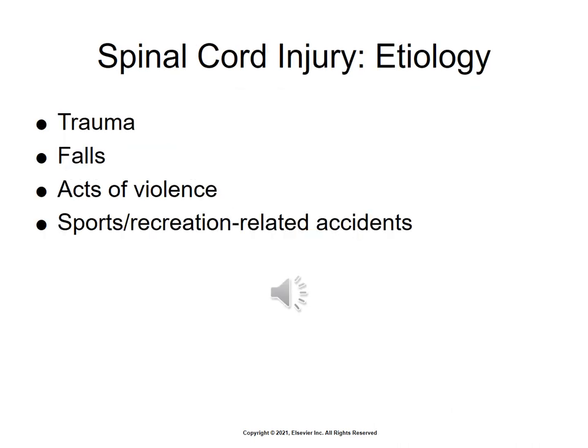The primary etiology for spinal cord injury is trauma — falls, acts of violence, or sports and recreational activities. Secondary injuries due to spinal cord injuries include hemorrhage, ischemia, hypovolemia, and local edema. Local edema is due to primary and secondary injuries contributing to capillary compression and cord ischemia.